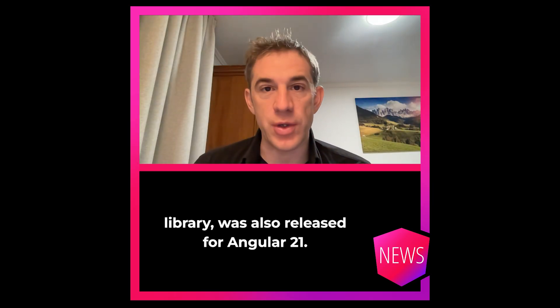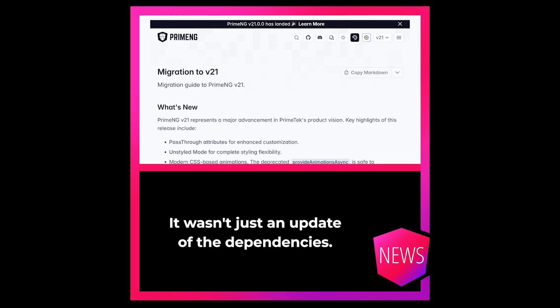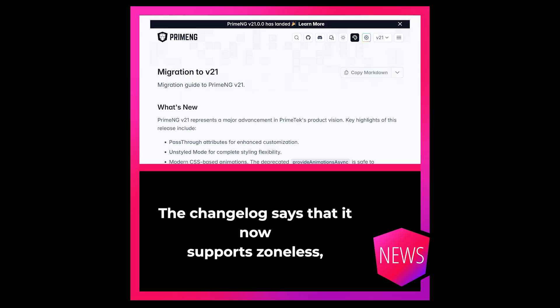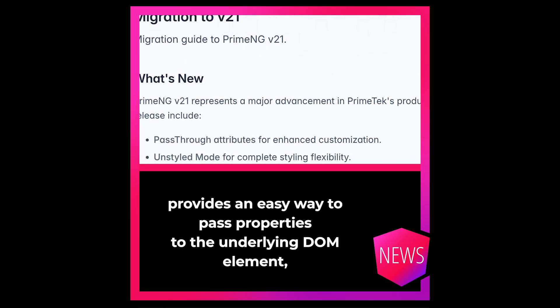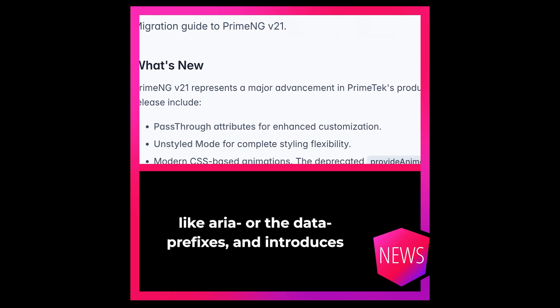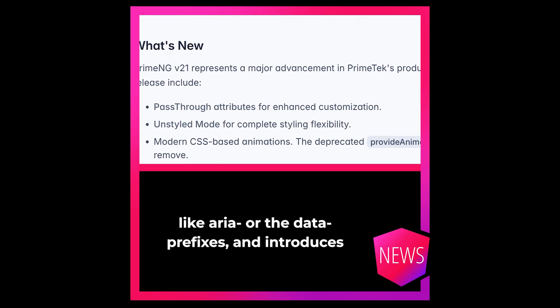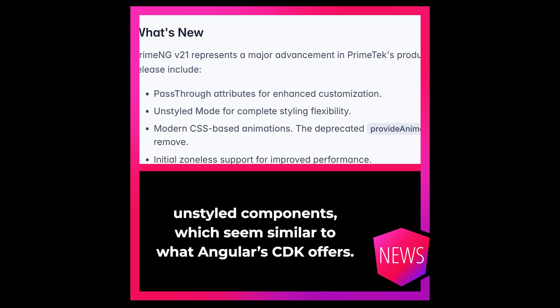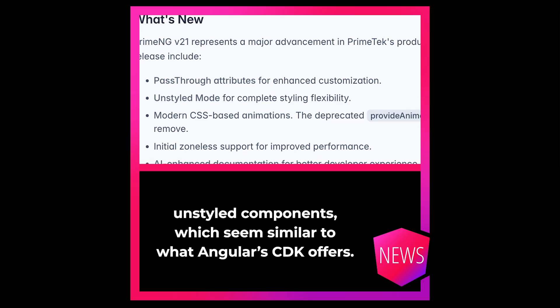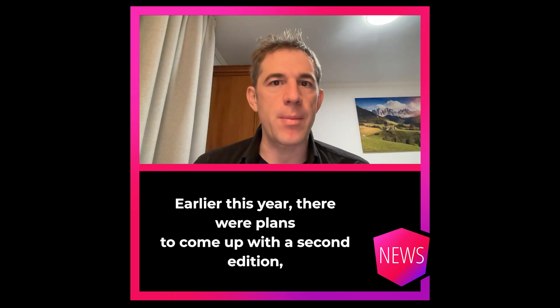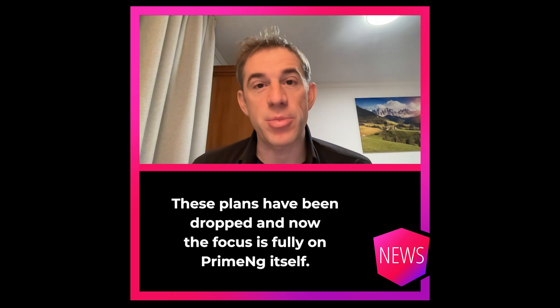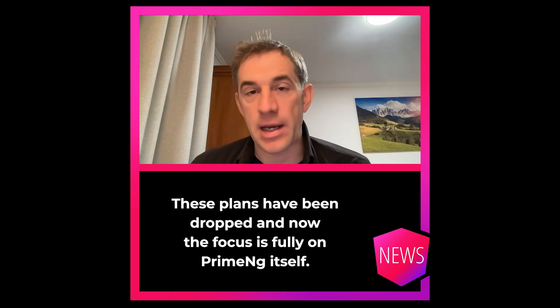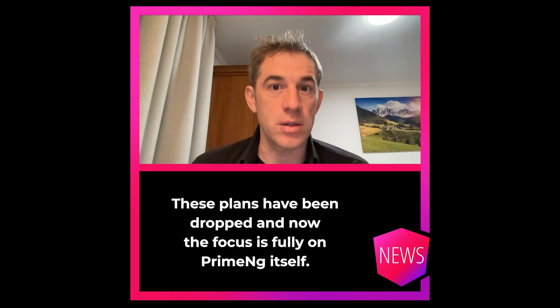PrimeNG, a popular UI library, was also released for Angular 21, and it wasn't just a dependency update. The changelog says it now supports zoneless, provides an easy way to pass through properties to the underlying DOM element like ARIA or data prefixes, and introduces unstyled components similar to what Angular CDK offers. Earlier plans for a second edition called PrimeNGX have been dropped, and the focus is now fully on PrimeNG itself.